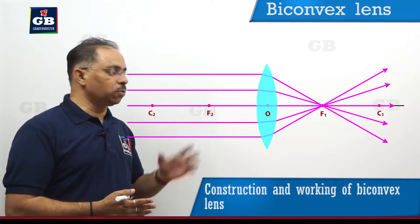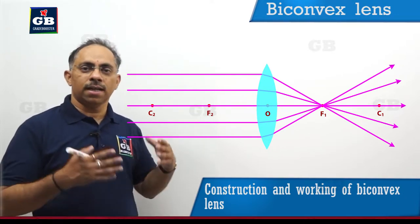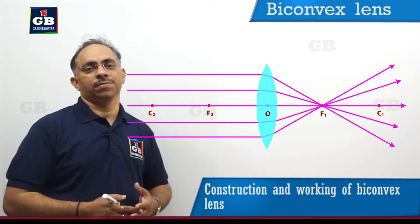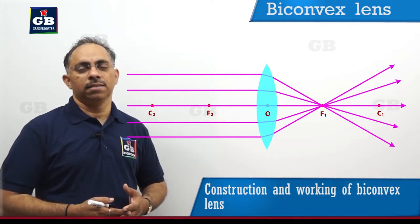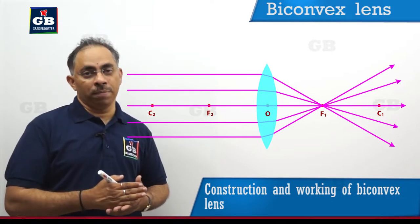All the light rays after passing through the lens or the two surfaces of the lens, they are meeting at a point. This particular point we will be calling it as a principal focus.